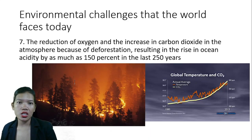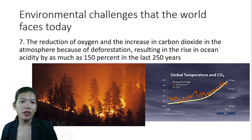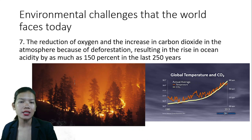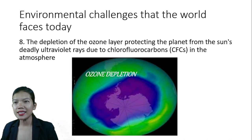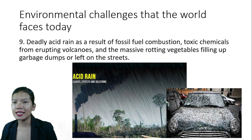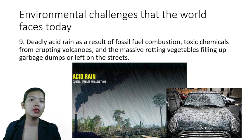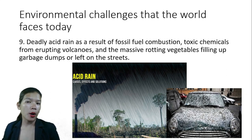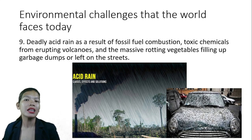Seventh is the reduction of oxygen and the increase in carbon dioxide in the atmosphere due to deforestation, resulting in a rise in ocean acidity by as much as 150 percent in the last 250 years. Eighth is the depletion of the ozone layer — which protects the planet from the sun's deadly ultraviolet rays — due to chlorofluorocarbons in the atmosphere. Ninth is deadly acid rain resulting from fossil fuel combustion, toxic chemicals from erupting volcanoes, and massive rotting waste.